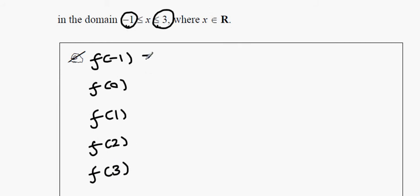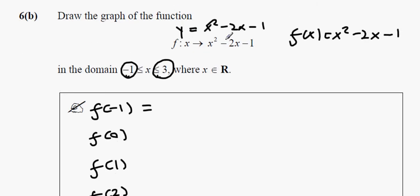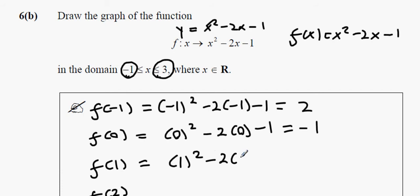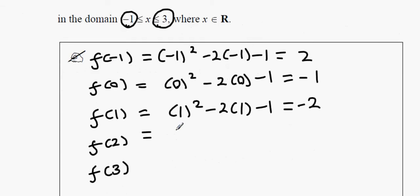We're going to put them all into the equation and see what points we get. The first one: minus 1 squared minus 2 times minus 1 minus 1 equals 2. Next: 0 squared minus 2 times 0 minus 1 equals minus 1. Then: 1 squared minus 2 times 1 minus 1 equals minus 2. Then: 2 squared minus 2 times 2 minus 1 equals minus 1.